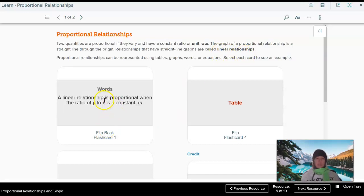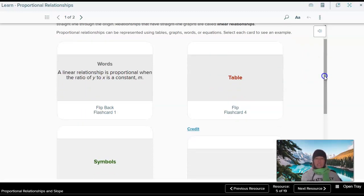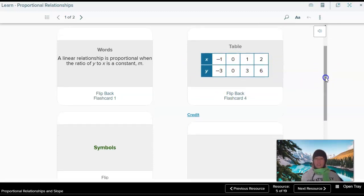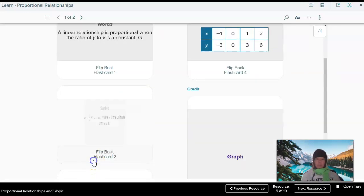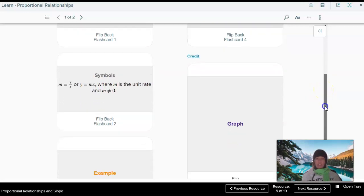So a few things. A linear relationship is proportional when the ratio of y to x is a constant. This doesn't make sense yet. It will after we look at a few examples. We can use a table to represent a linear relationship or proportional linear relationship. But in that table, we should see the point zero, zero because this graph goes through the origin. So this point will always be on the graph of a proportional linear relationship. In symbols, you're going to see this equation, y equals mx. And m is our unit rate, or sometimes called our constant of proportionality, if you remember that term from 7th grade math.